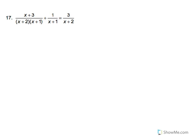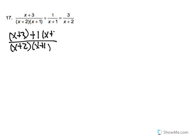So let's look at the expression on the left. Our common denominator on the left is x plus 2, x plus 1. So we have x plus 3 plus 1 times x plus 2. And the expression on the right remains the same.